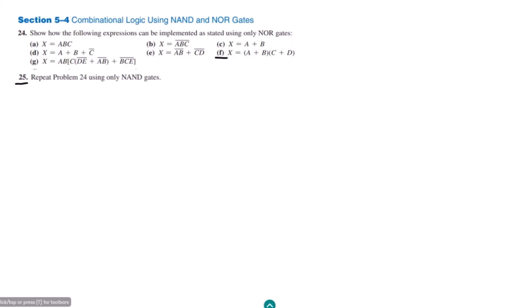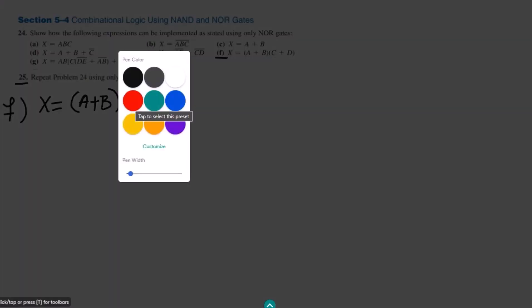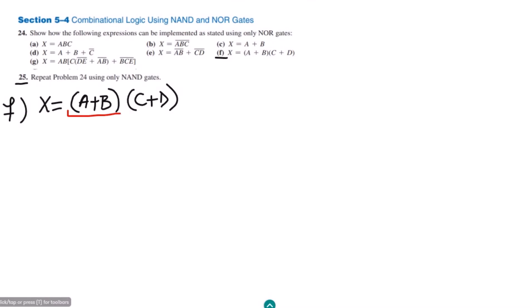So the part f of our question is, in part f we have A plus B multiplied by C plus D. So these are the operations we have to carry out. The first operation is this OR operation, the second one is also the OR operation, while at the end these have to be ANDed together.